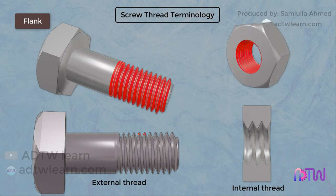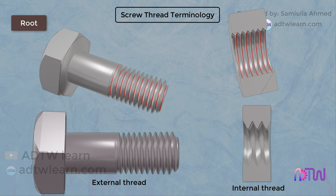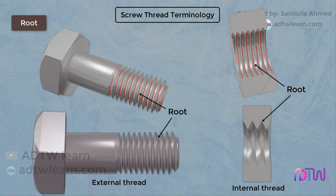Flank: it is the surface joining the crest and root. Root: the root is the bottom of the groove between the two flanking surfaces of the thread, whether internal or external. For the external thread, this is the root of the thread. For the internal thread, this is the root of the thread.